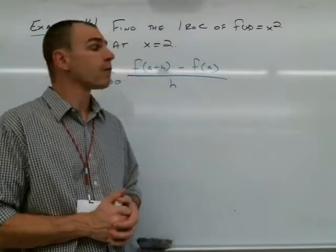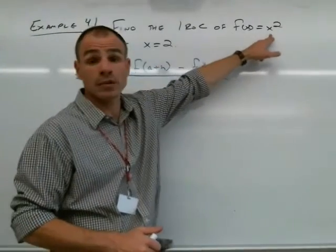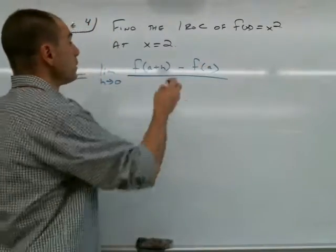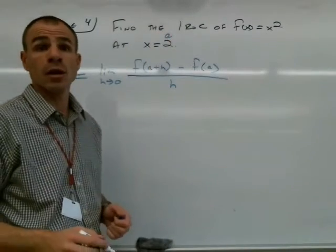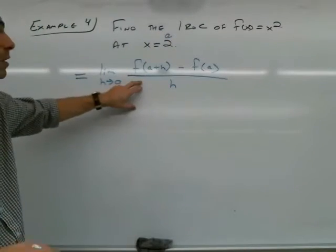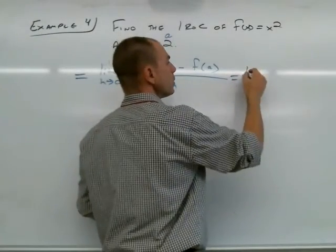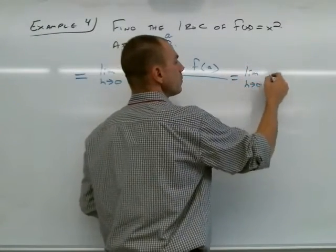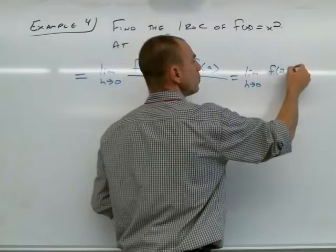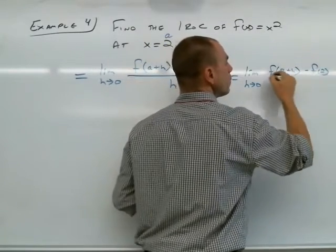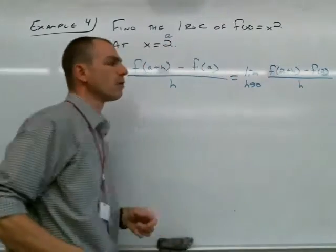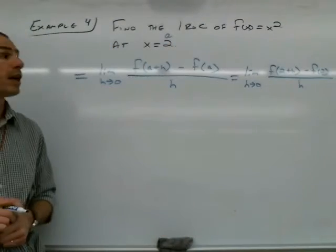Our function is x squared, and our a value is 2. So when we're looking at this, we're actually interested in the limit as h approaches 0 of f of 2 plus h minus f of 2, all over h. That's what we're looking to find.